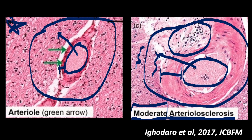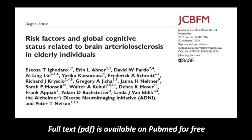These images come from my published paper in the Journal of Cerebral Blood Flow and Metabolism in 2017. The manuscript is titled 'Risk Factors and Global Cognitive Status Related to Brain Arteriolar Sclerosis in Elderly Individuals.' I was the main author, written during my graduate studies along with Dr. Peter Nelson, my research mentor. We also had several epidemiologists, neuropathologists, and neuroscientists involved in the study.